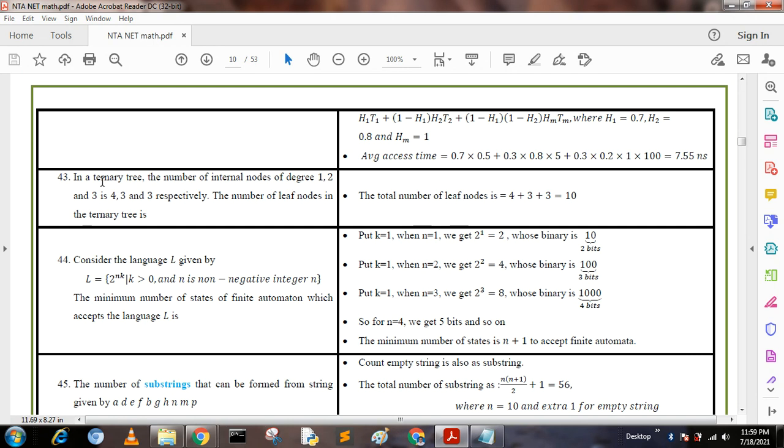Next question: In a ternary tree, the number of internal nodes of degree one, two, and three is 4, 3, and 3 respectively. The number of leaf nodes in the ternary tree is: We add these values 4 + 3 + 3 and get the answer. The total number of leaf nodes is 10.